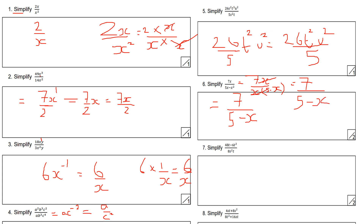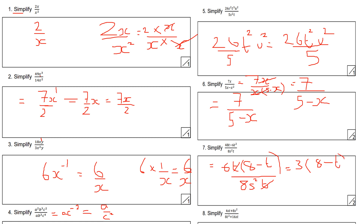This next one: if I factor out 6t on the top I have 6t(8 minus t) all over 8s²t. I can then cancel top and bottom by t. 6 divided by 8 simplifies to 3 quarters, so the answer is 3(8 minus t) all over 4s squared.